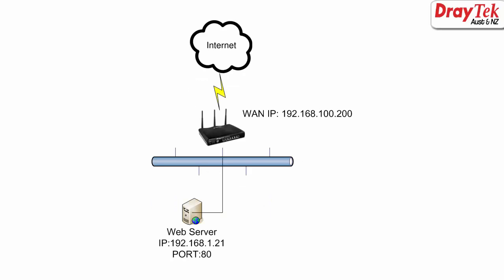The first one is an HTTP or web server with local IP address 192.168.1.21 and port number 80. The second one is a VNC server with IP address 192.168.1.20 and port number 5900.